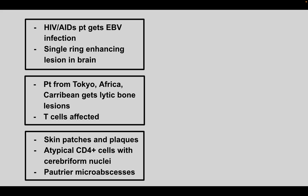Next is an HIV or AIDS patient that gets an EBV infection. They have a single ring-enhancing lesion in their brain. This is primary CNS lymphoma.